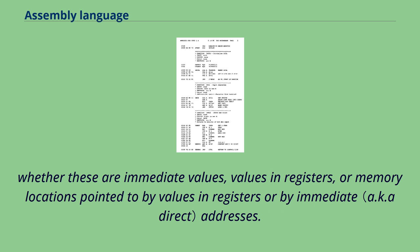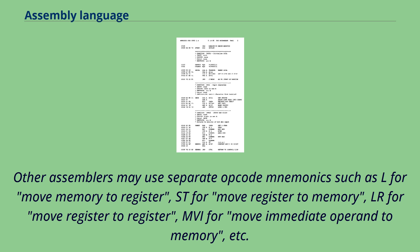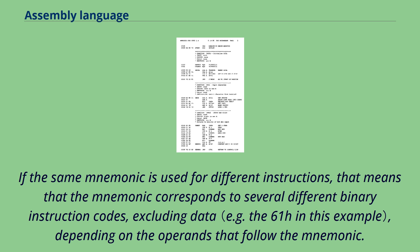Whether these are immediate values, values in registers, or memory locations pointed to by values in registers or by immediate addresses. Other assemblers may use separate opcode mnemonics such as L for move memory to register, ST for move register to memory, LR for move register to register, MVI for move immediate operand to memory, etc. If the same mnemonic is used for different instructions, that means the mnemonic corresponds to several different binary instruction codes, excluding data, depending on the operands that follow the mnemonic.